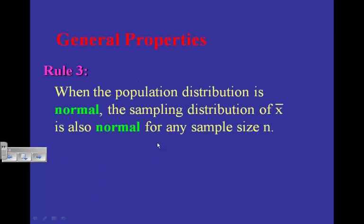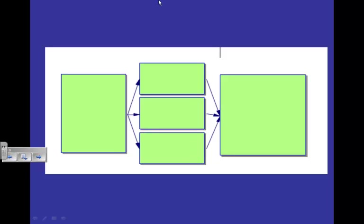Rule number three: if the population distribution is normal, then the sampling distribution of x-bar will also be normal for any sample size n. In other words, if the population starts out approximately normal, the sampling distribution will also be approximately normal no matter what sample size you use.